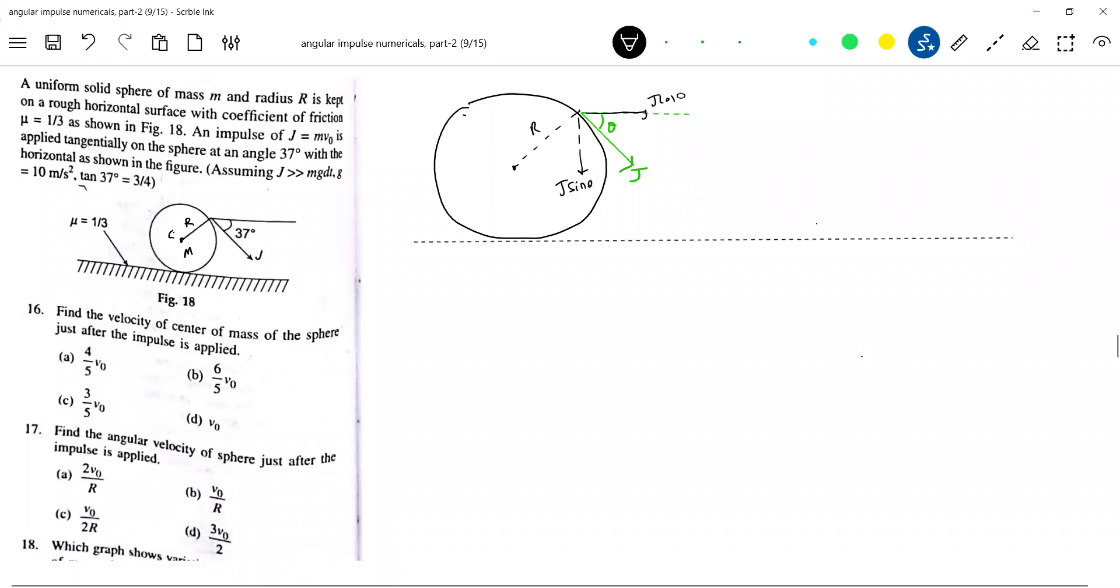So this J sin theta will press the sphere very hard into the ground. It's a rigid body. The normal contact which is acting, suddenly the normal contact will increase. And because of that, we will get here a Jy.